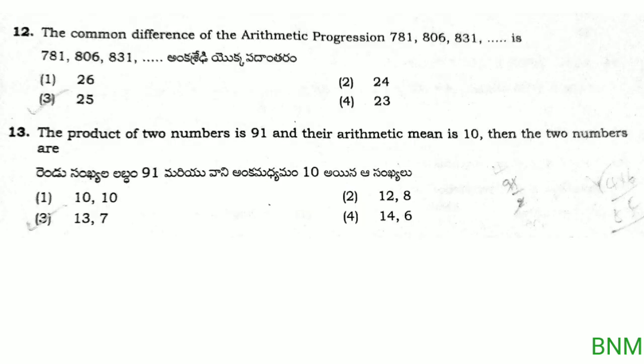Next bit: the common difference of the arithmetic progression 781, 806, 831. Using the formula common difference equals b minus a: 806 minus 781 equals 25. The right answer is 25, which is the third option.